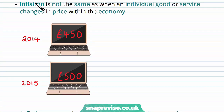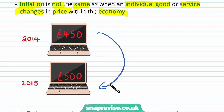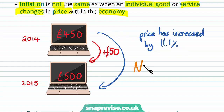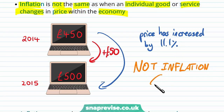Inflation is not the same as when an individual good or service changes in price. Suppose we're looking at 2014 to 2015 and the price change has been plus £50 — we would conclude that the price has increased by 11.1%. However, this is not inflation, because we are only considering one good.